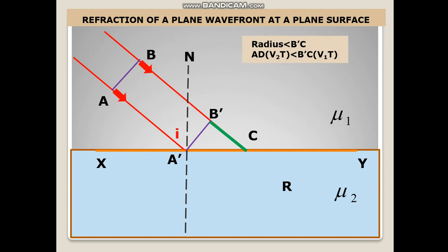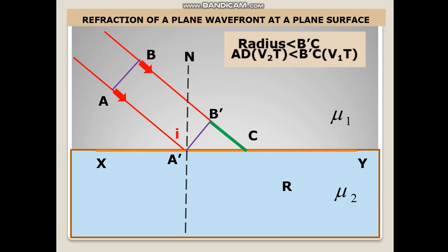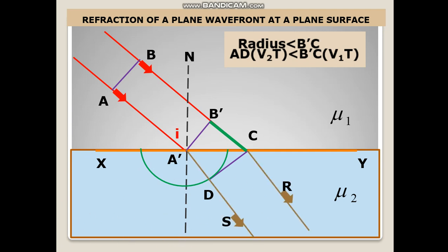We start drawing the wavelet with radius less than B dash C. We draw a tangent to the wavelet. At point D we have the refracted wave. DC is the refracted wavefront. Therefore R is the angle of refraction between the normal and the refracted ray at S. This angle comes out to be I, because the wavefront and wave normal are always perpendicular to each other.